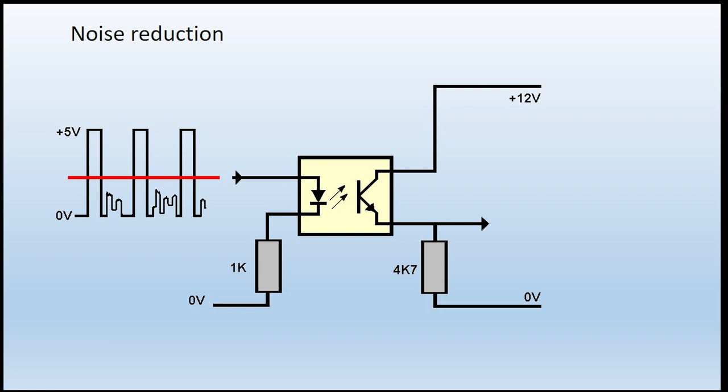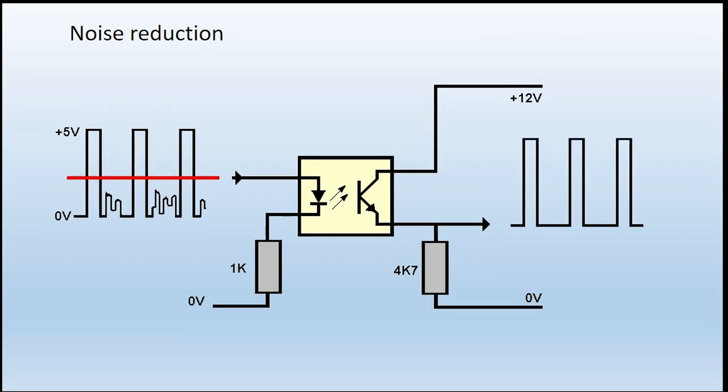But if we pass them through an opto-isolator, you can see what happens now. Because the LED won't start to illuminate until maybe 2.5 to 3 volts as shown here, then the LED only illuminates during these bursts here. So the output is now clean.